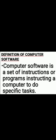Now we move into today's lesson. The definition of computer software: computer software is a set of instructions or programs instructing a computer to do specific tasks. These instructions tell the computer what it should do at a specific time.